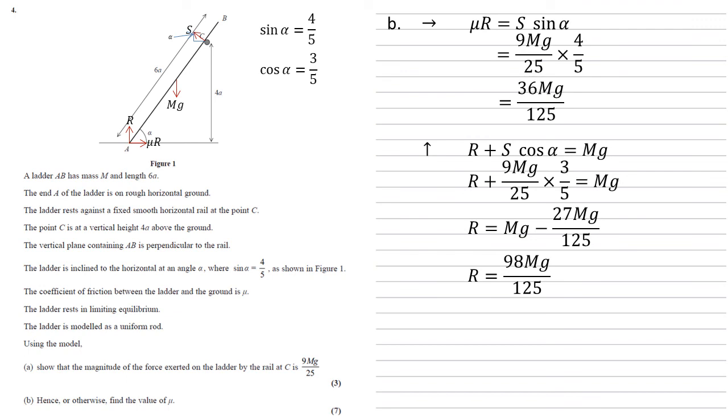Now at the top we've worked out that mu R equals 36MG over 125 so we can substitute our value for R into that so we get that 98MG over 125 times mu equals 36MG over 125.